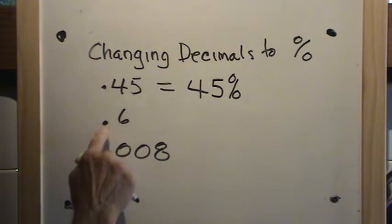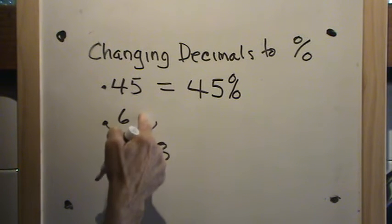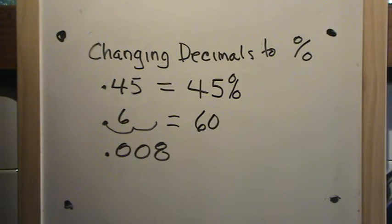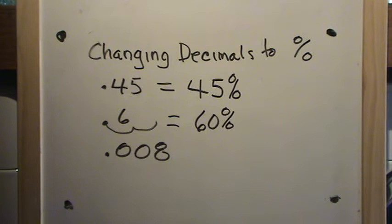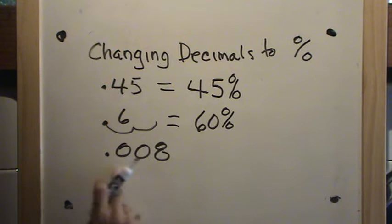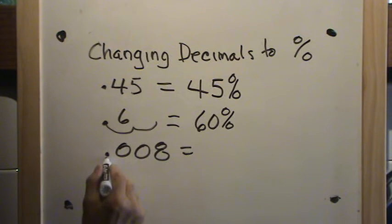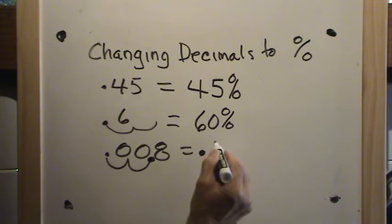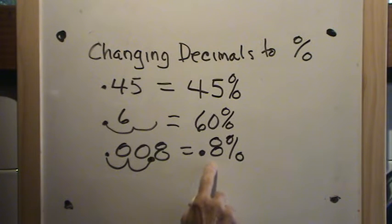Here we have six-tenths. The rule is the same — two places to the right — but there's nothing there, so we have to put a zero in as a placeholder and we put the percent sign. Now here we had eight-thousandths: tenths, hundredths, thousandths. Two places to the right — one, two — so the decimal has to go here. We get eight-tenths of a percent.